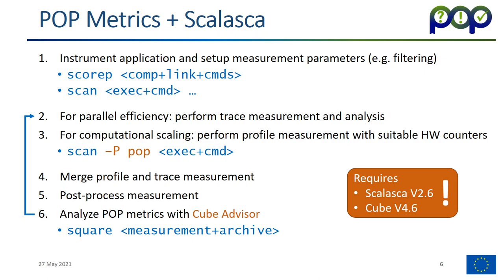In order to do a measurement with Scorep and Scalasca for the POP metrics, we have to do the usual instrumentation and setup. First, as in every measurement, you instrument using Scorep in front of compiler and link commands, and do a first profile experiment to determine overhead and filtering. But once that is done, you can do the POP measurements. You have to do two measurements: the first one is for computing the parallel efficiency, which requires a trace measurement and analysis; and for computing the computational scaling, you do a profile measurement with suitable hardware counters.